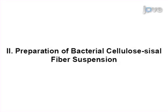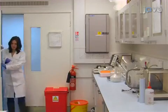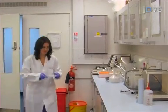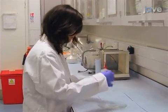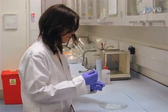Prior to starting this procedure, measure the amount of wet bacterial cellulose pellicles equivalent to 18 grams of dry bacterial cellulose from a predetermined wet to dry mass of bacterial cellulose.